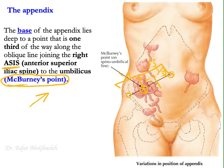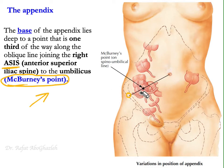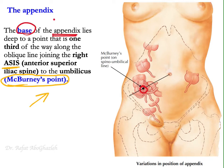McBurney's point is the junction of the lateral one-third and medial two-thirds of the line between the anterior superior iliac spine and umbilicus. It marks the base of the appendix. This is clinically important because surgeons make their incision here and because it is the point of maximum pain during appendicitis. During the rebound test — applying pressure then suddenly releasing — severe pain at this point indicates irritation of the parietal peritoneum in the right iliac fossa.